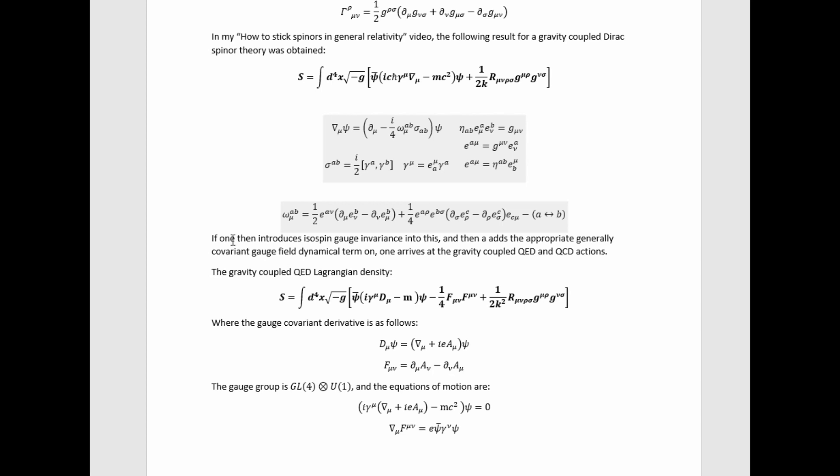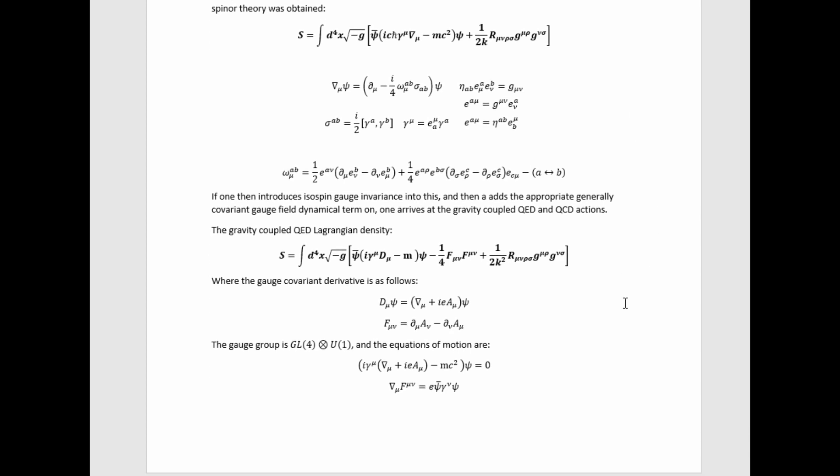If one then introduces a spin gauge invariance to this, and then adds the appropriate generally covariant gauge field dynamical term on, one arrives at the gravity coupled QED and QCD Lagrangians.